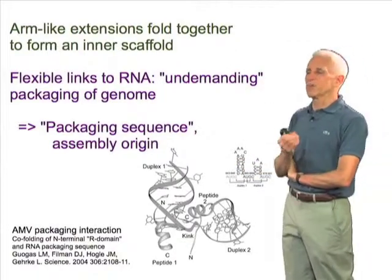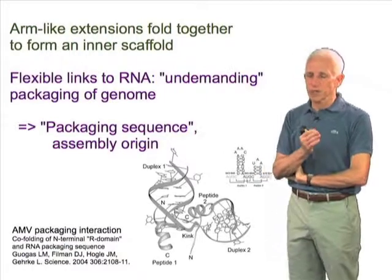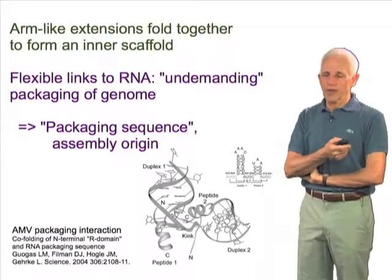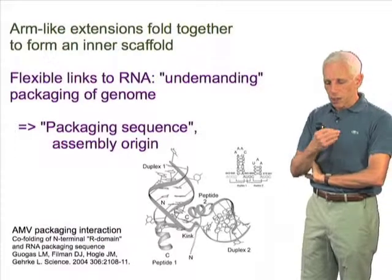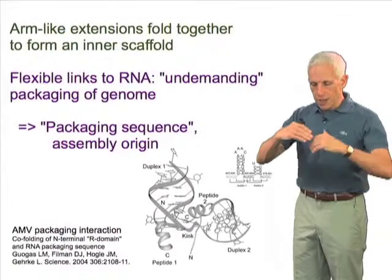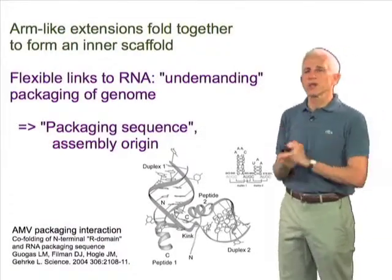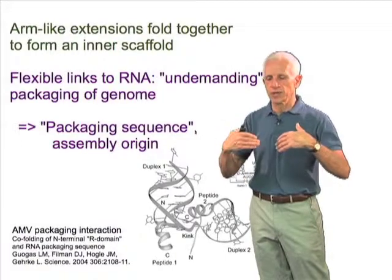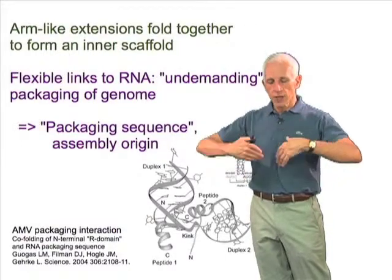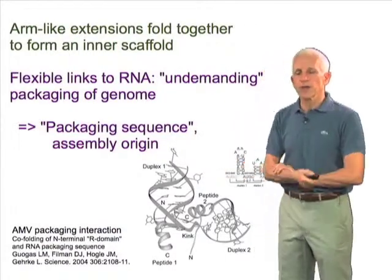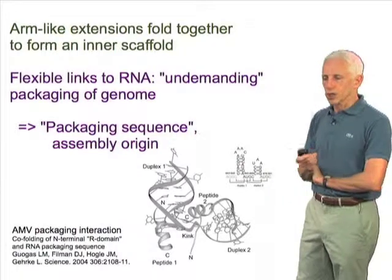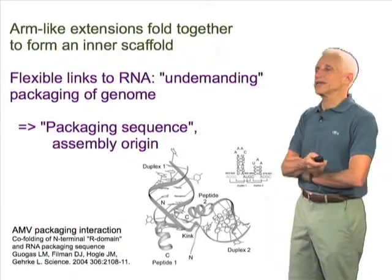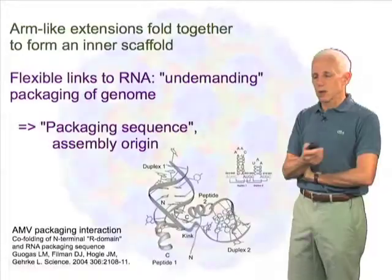Probably one dimer is responsible for recognizing this pair of stem loops, and the full packaging sequence might have three such pairs and three dimers. But the protein shell is composed of a much larger number of subunits, and all the remaining protein subunits will have non-specific, charge-neutralizing interactions with the RNA.